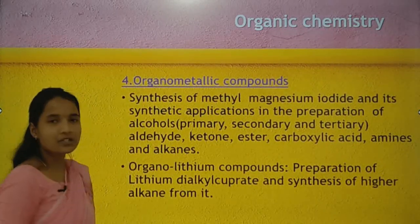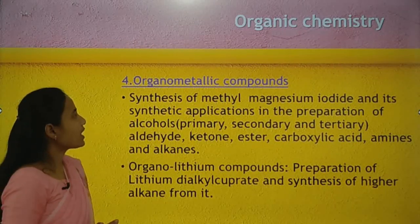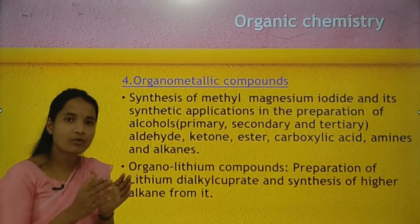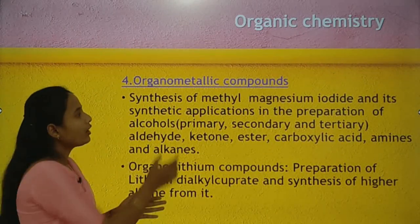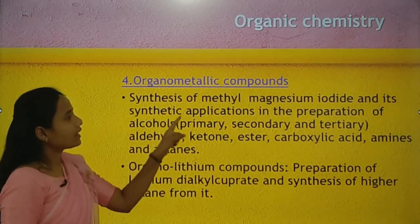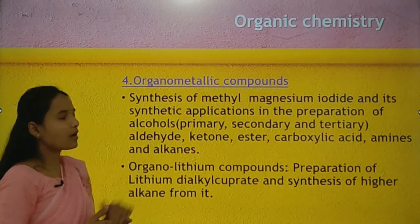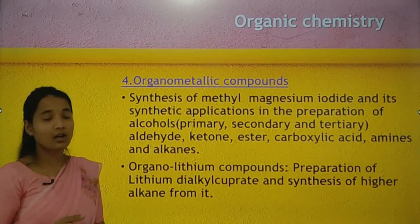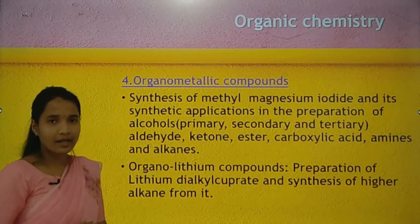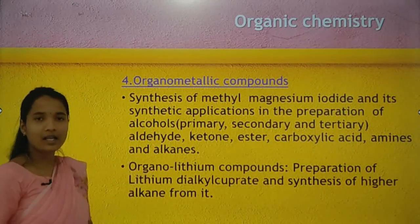The next chapter is organometallic compounds. The learning points include synthesis of methyl magnesium iodide (Grignard reagent), which is very important as it forms the basis for further concepts. Its synthetic applications include preparation of primary, secondary, and tertiary alcohols, as well as aldehydes, ketones, esters, carboxylic acids, amines, and alkanes.